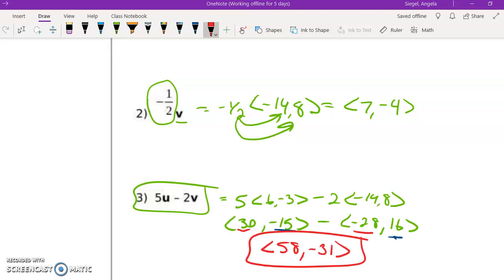Okay, so you should have gotten your vector coordinates as positive 58 and then negative 31. And that is it. All right, thanks for listening.